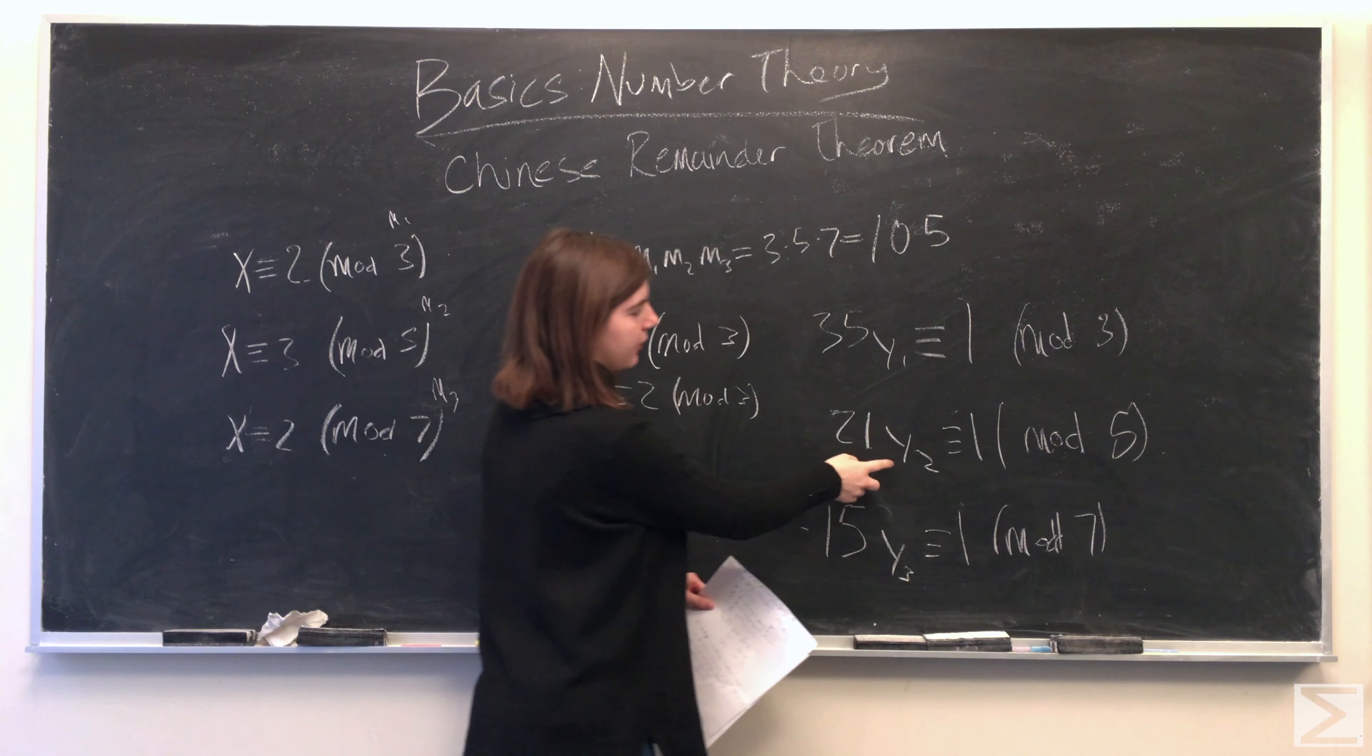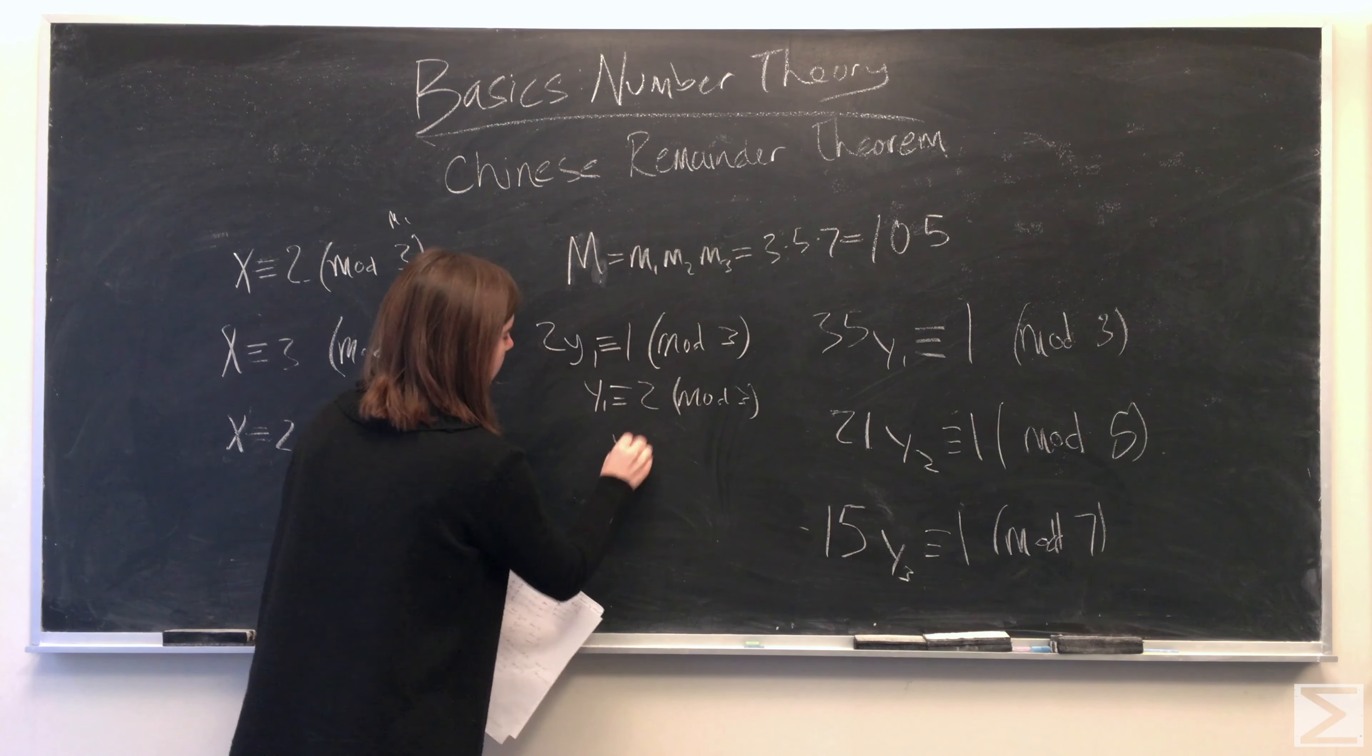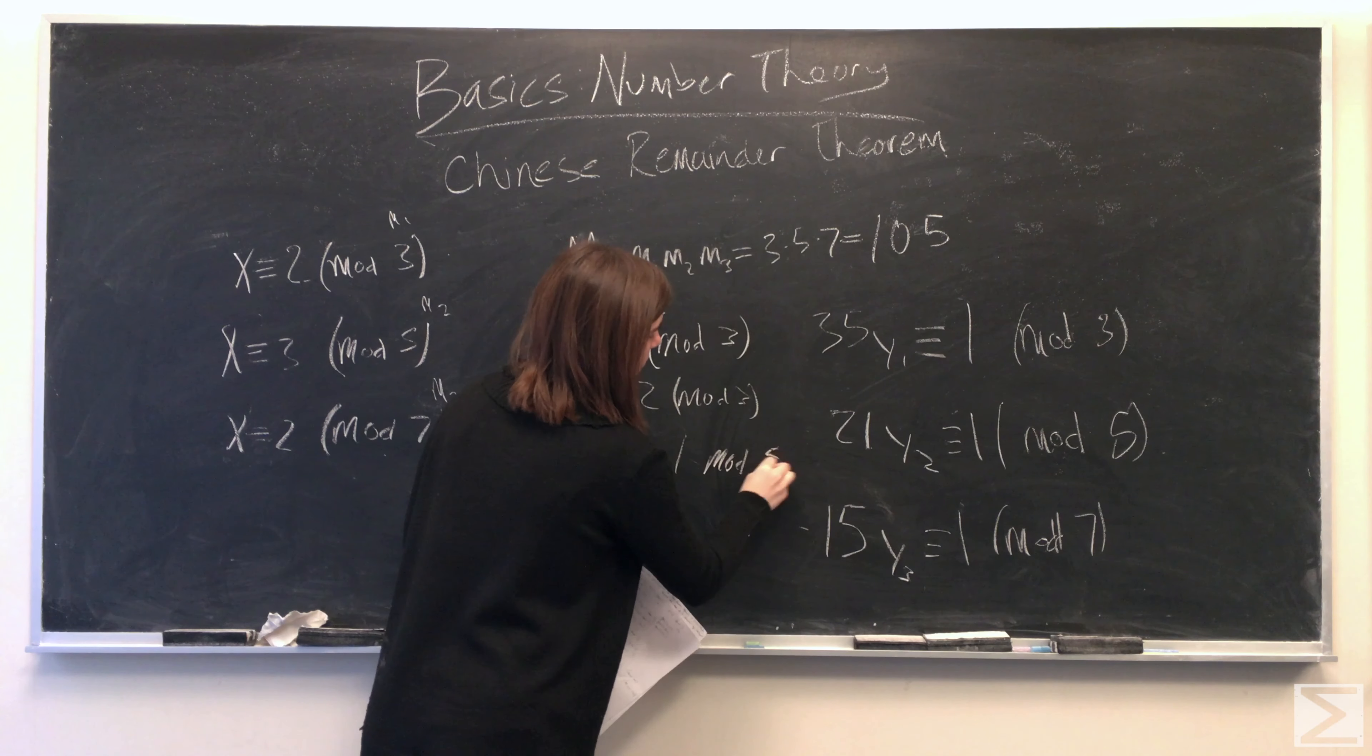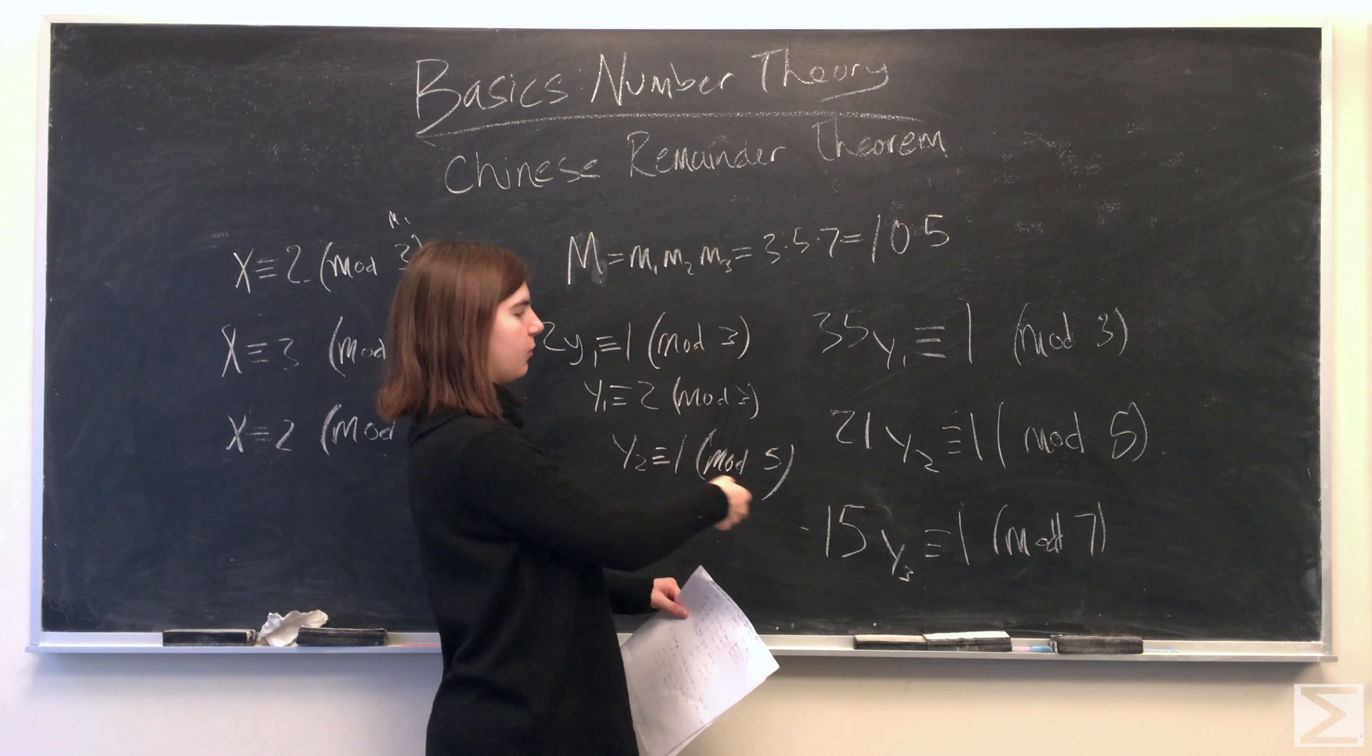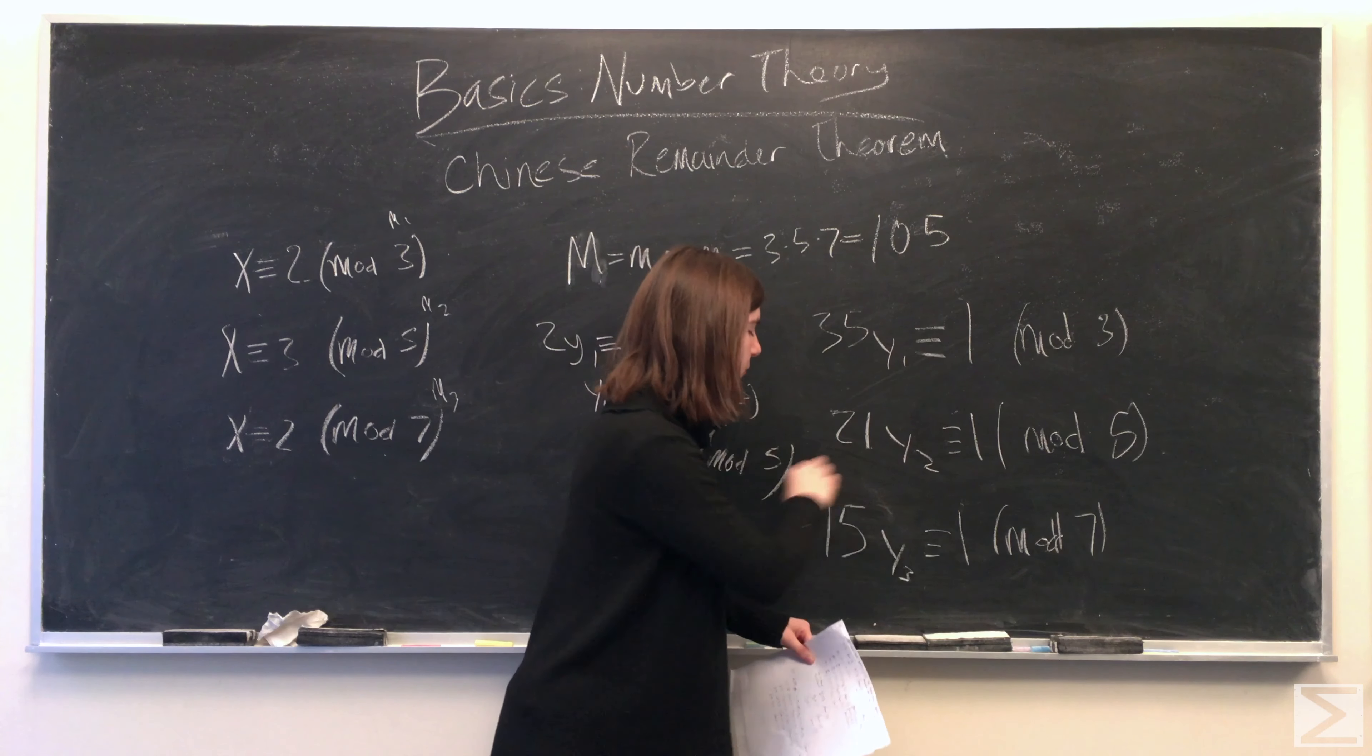And then for y2, 21 when divided by 5 has a remainder of 1, so y2 equals 1. And you can always check these, so 21 when y2 is 1, you have 21 is congruent to 1, and 21 minus 1 is 20, and that's a multiple of 5, so that works.